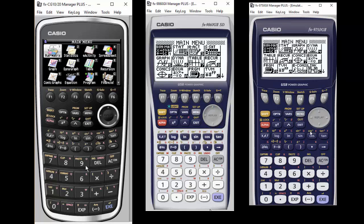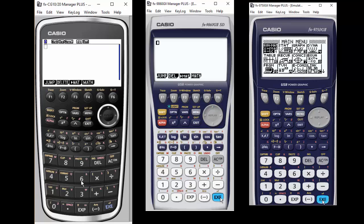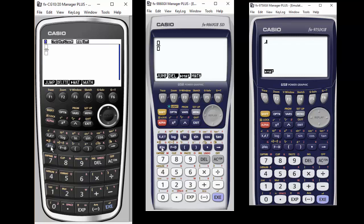So let's go back to the menu and you'll notice we're back in the main menu for all of them. We're going to go and show you another feature that some of them have and some of them don't. The first two calculators, the Prism and the 9860.